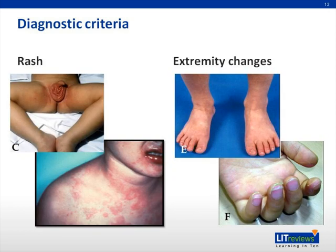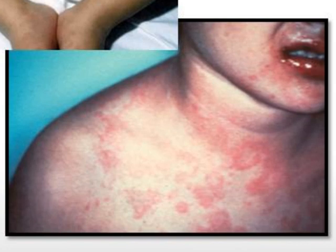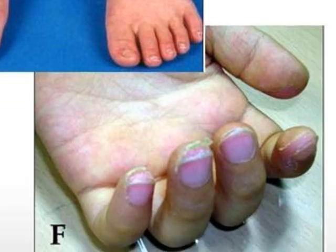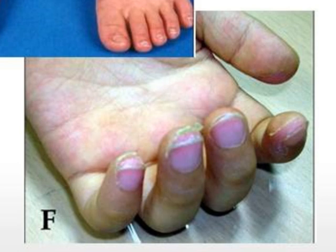Rashes in KD can be quite variable. The polymorphous macular exanthem typically seen involves slightly raised erythematous lesions, some with discrete borders and some with central clearing, as depicted in the bottom left picture. Perineal desquamation is also common during the acute phase, as depicted in the top left picture, but is not part of the diagnostic criteria. Indurated edema and erythema of the hands and feet is one of the extremity changes that may occur in KD, typically during the acute phase, as depicted in the top right picture. During the subacute phase, periungal peeling of the fingers and toes may occur, as depicted in the bottom right picture.